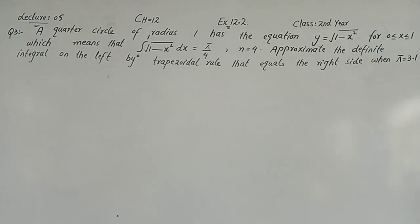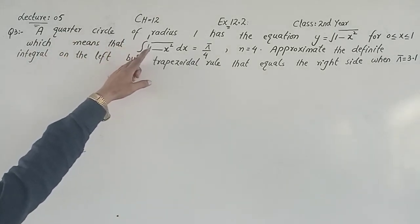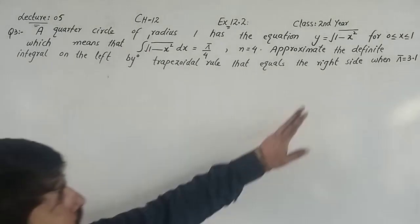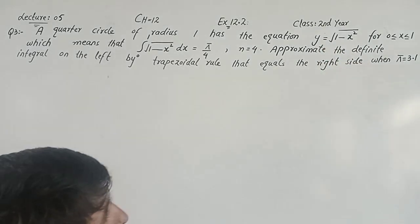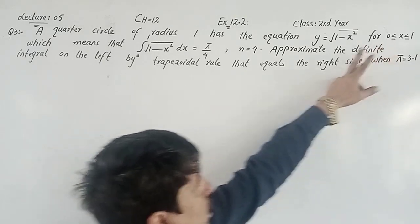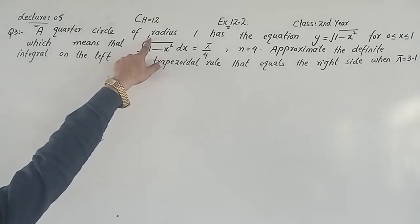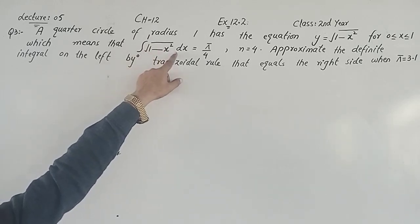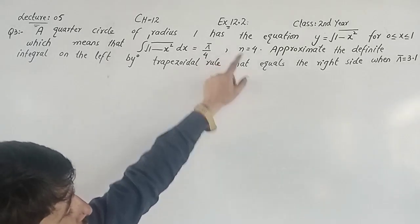Question number 3. A quarter circle of radius 1 has the equation y equal to √(1-x²), where 0 ≤ x ≤ 1. This means the definite integral from 0 to 1 of √(1-x²) dx is equal to π/4. For n equal to 4, we approximate the definite integral on the left side by the trapezoidal rule.